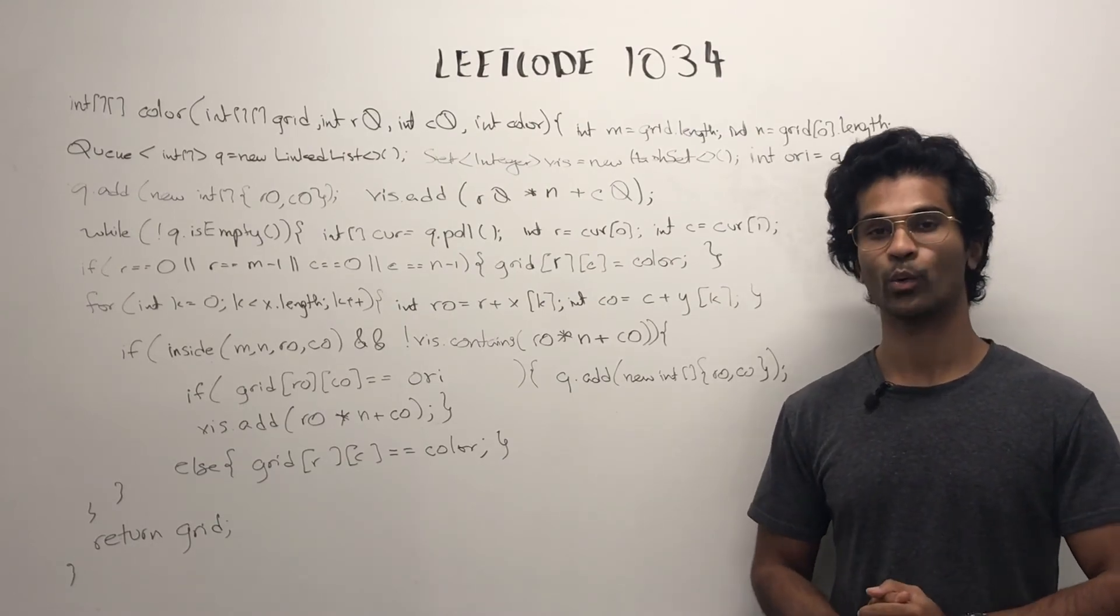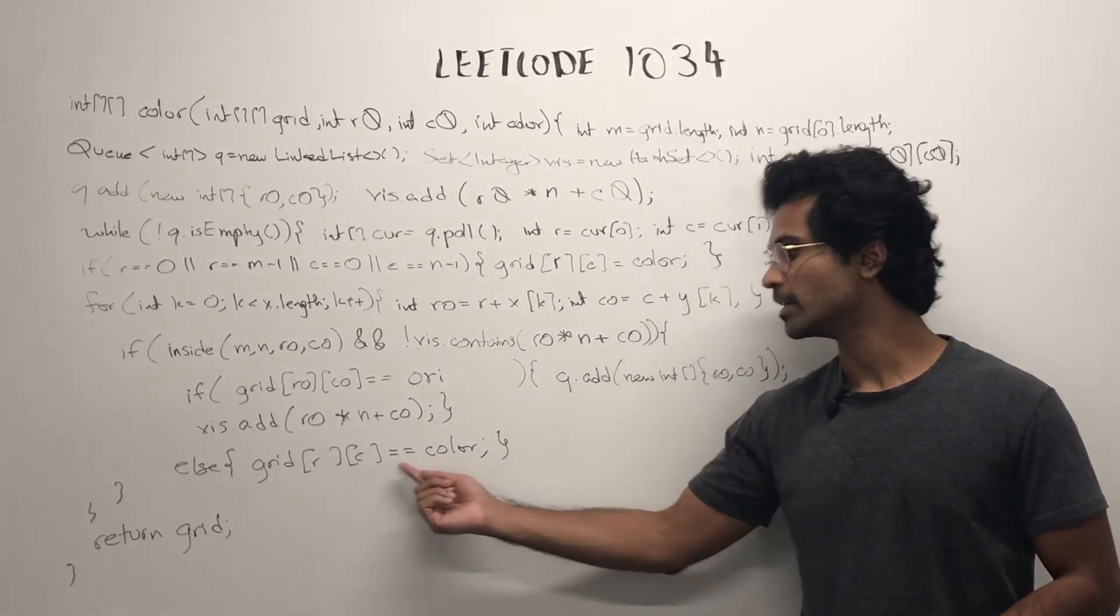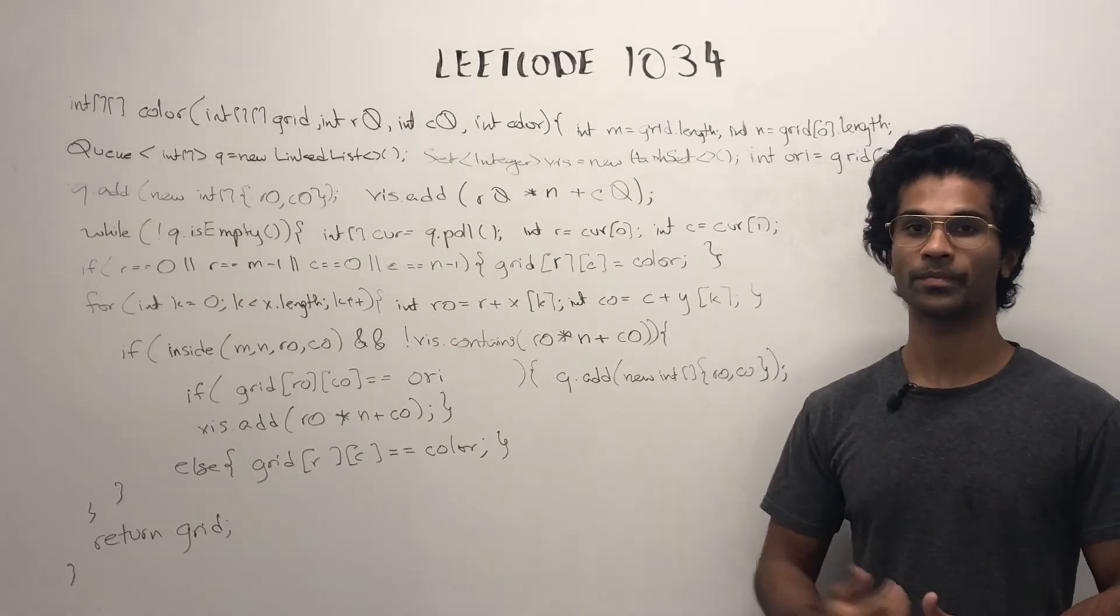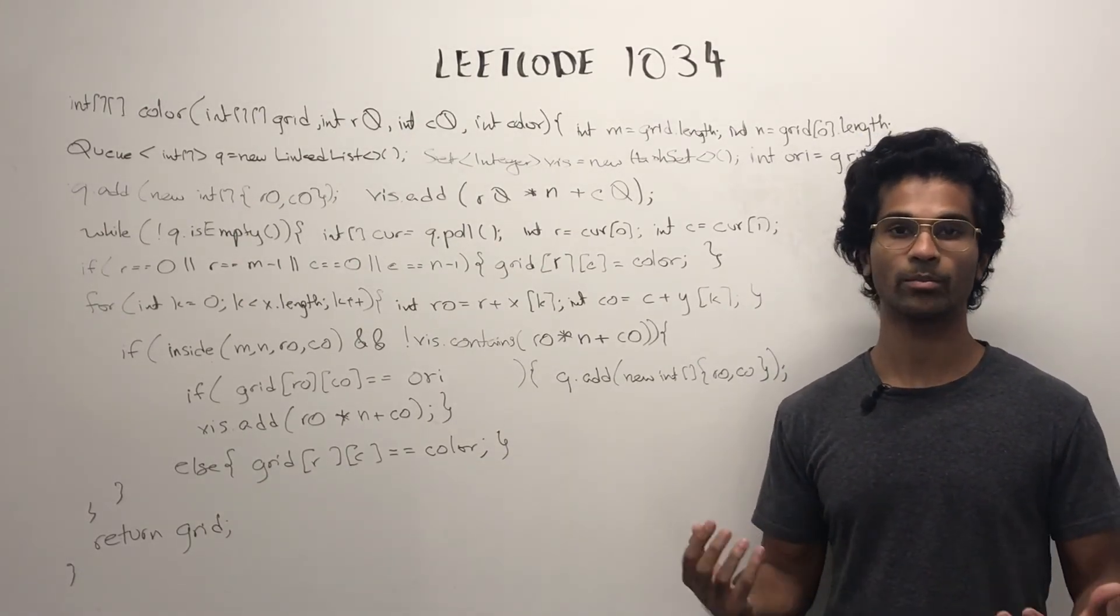Otherwise, we're going to color that grid of R, C as the new color. Eventually, we just have to return the grid in place.